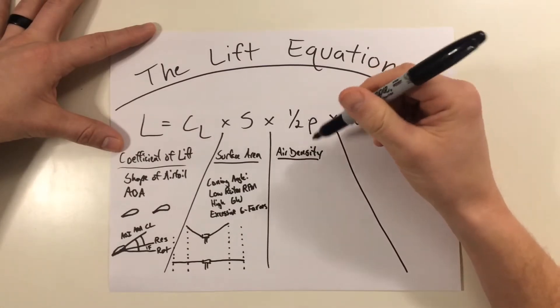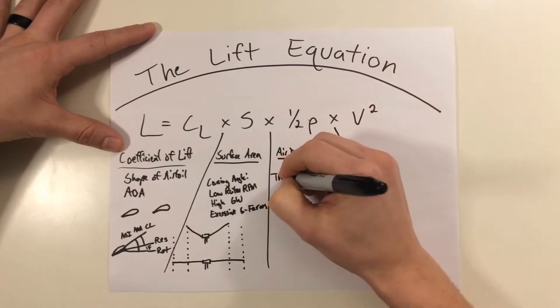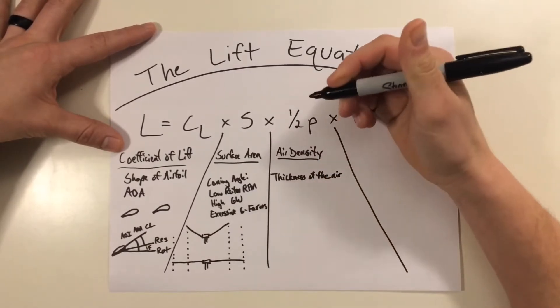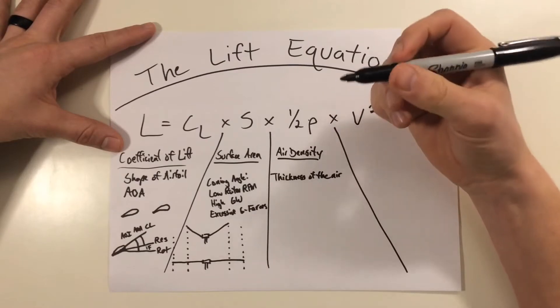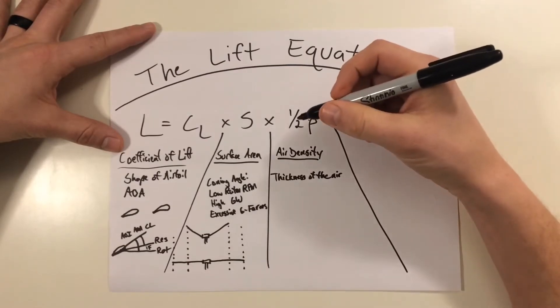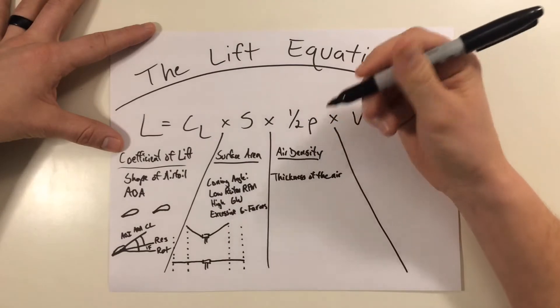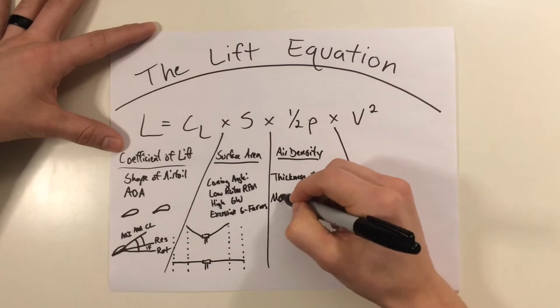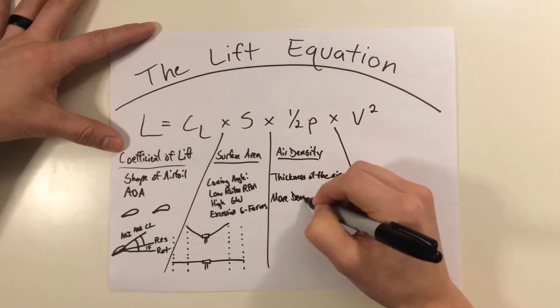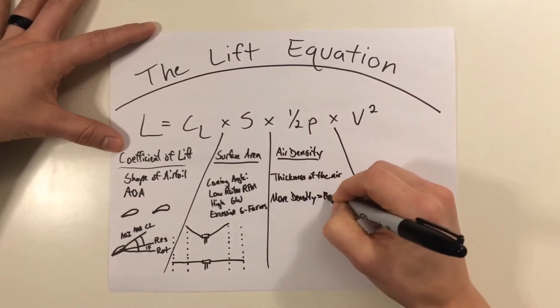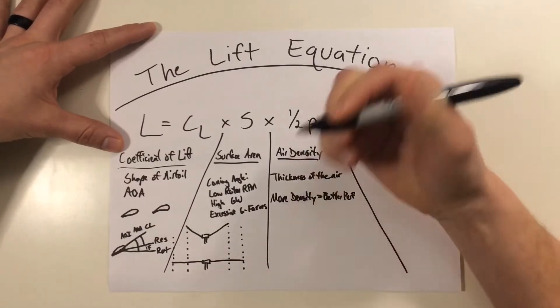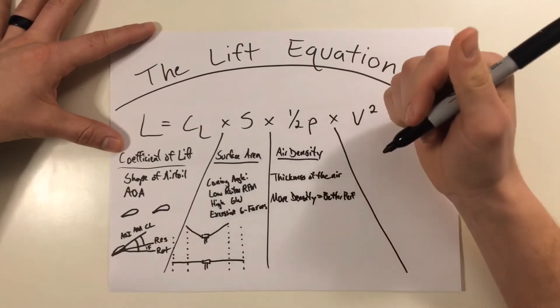Density deals with the viscosity or the thickness of the air. Now the thickness of the air for helicopters affects how easily the rotor can move air molecules around it. And for this, more density is going to equal better performance. So as density increases, performance increases. You get more out of the blade. But there are some factors that affect this, obviously with the air density.